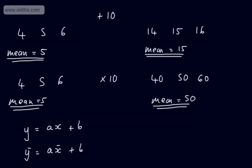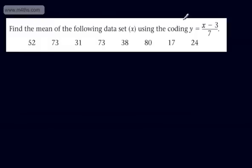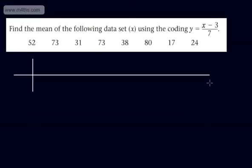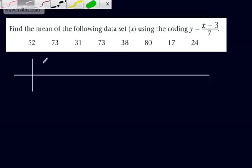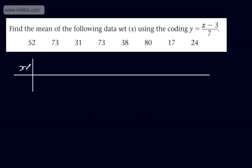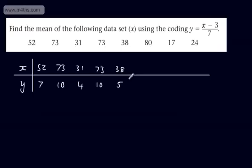So let's look at this in action. We're asked to find the mean of the following data set X using the coding Y = (X − 3) / 7. Let's put this in a table with columns X and Y. We have 52 → 7, 73 → 10, 31 → 4, 73 → 10, 38 → 5, 80 → 11, 17 → 2, and finally 24 → 3. All I've done is applied the linear coding Y = (X − 3) / 7.